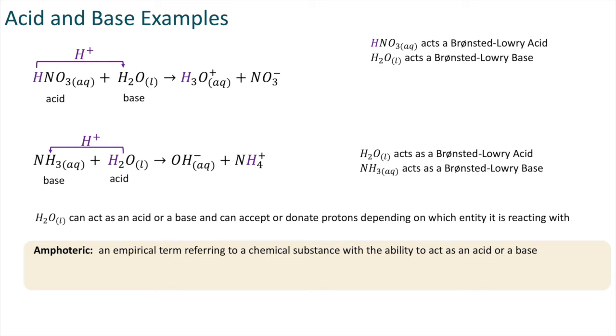Water is an example of an amphoteric species. Amphoteric means it's an empirical term referring to a chemical substance which has the ability to act as either an acid or a base.